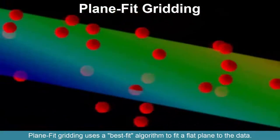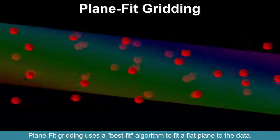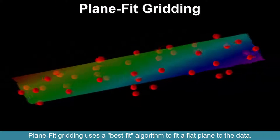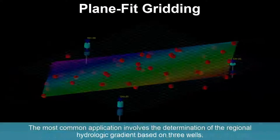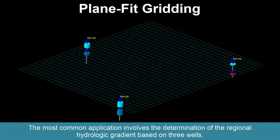Plane fit gridding uses a best fit algorithm to fit a flat plane to the data. The most common application involves the determination of the regional hydrologic gradient based on three wells.